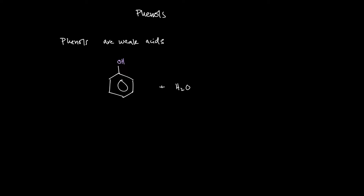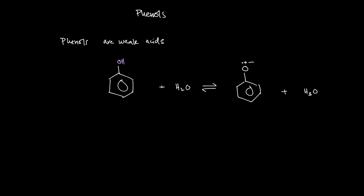For something to be considered acidic, it means it has a stronger tendency to donate protons than water itself. Water is your relative comparison. So when water and phenol react, phenol forms a conjugate base — the phenoxide ion — and you form H3O plus. The phenoxide ion is the conjugate base of phenol.